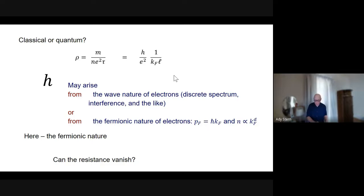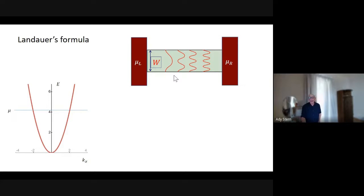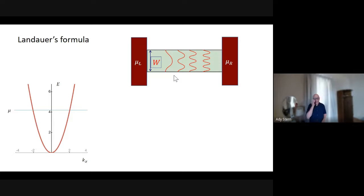In this case, the appearance of h in the formula is a consequence of the fermionic statistics. Now, can we take the mean free path to infinity — remove all impurities — and have the resistance become zero? The answer is no, and it was given by Landauer, who had a different formulation of resistance. Before I review that, let me just make sure you can hear me. Good. So what did Landauer say?